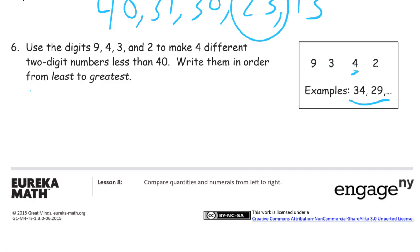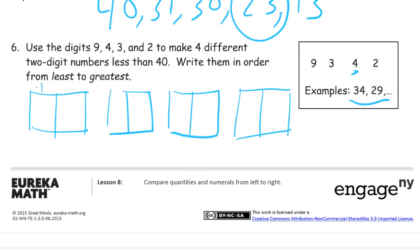So we could have... I'm just going to draw some place value boxes here. Now maybe you don't have to do this, but this might help if you feel a little stuck. And then remember, at the end of this, after we've figured out the four numbers, we're going to have to write them in least to greatest afterwards.